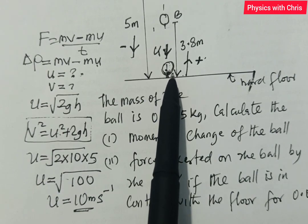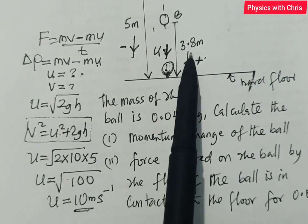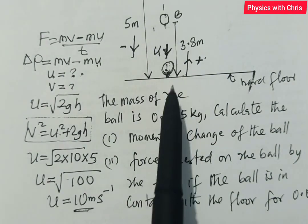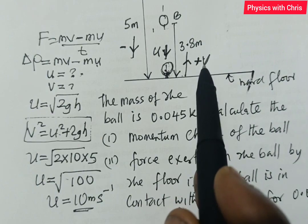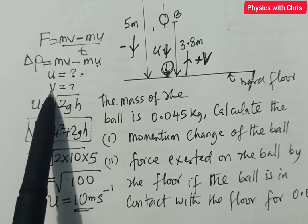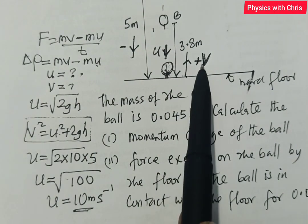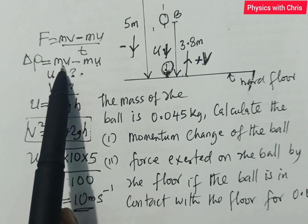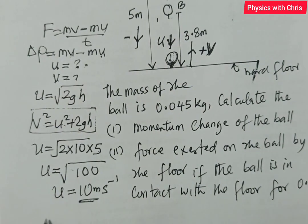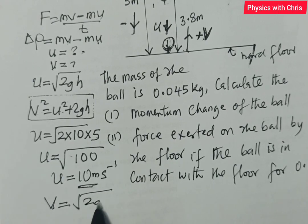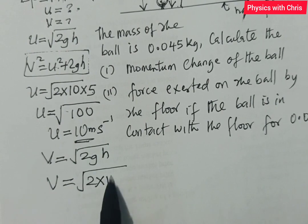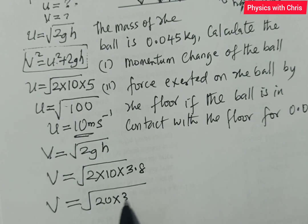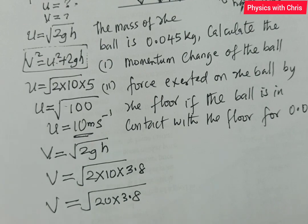After contact with the surface, the ball rebounds upward and again comes to rest at point B, where its speed is zero. To find the rebound speed v, I use the same equation v = √(2gh), this time with h = 3.8 m. So v = √(2 × 10 × 3.8) = √76 ≈ 8.7 m/s. The ball rebounds with a speed of 8.7 m/s, and multiplied by mass this gives the final momentum.